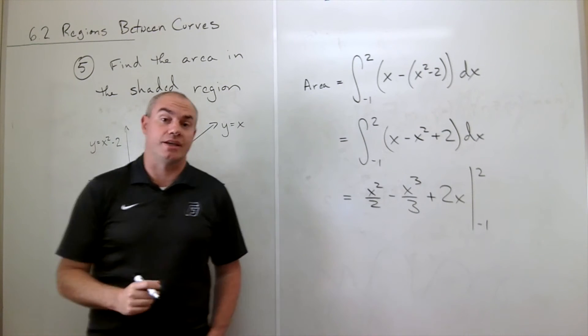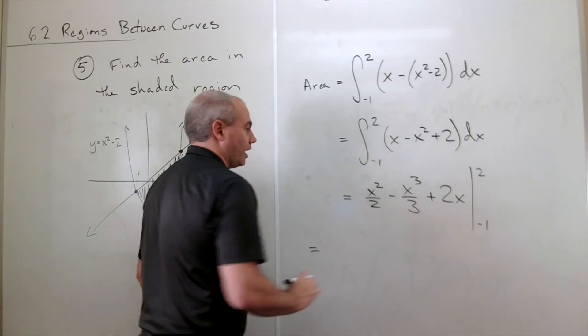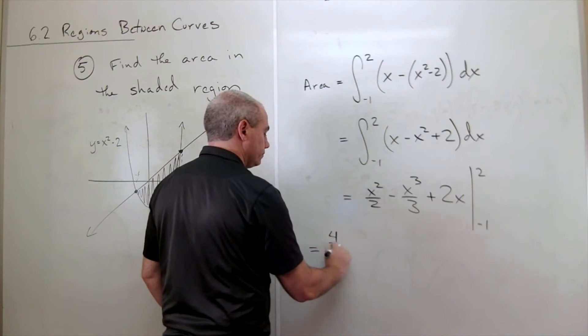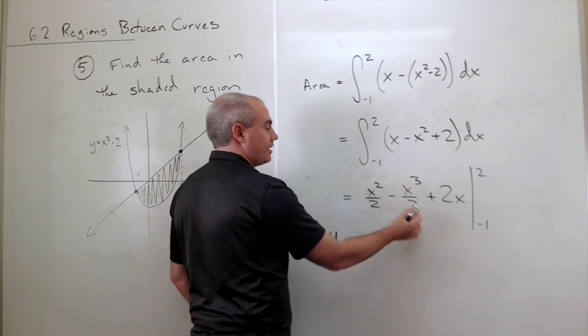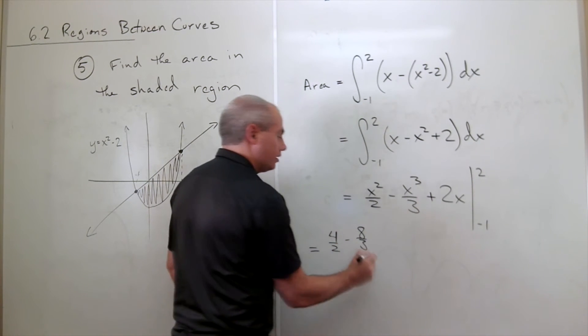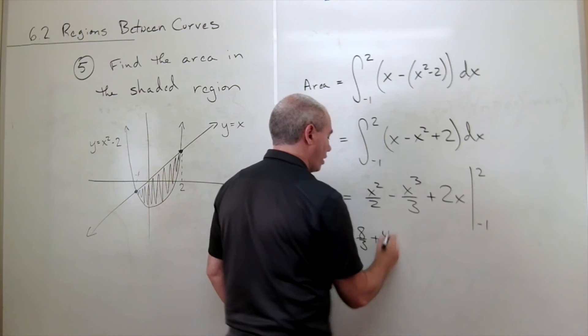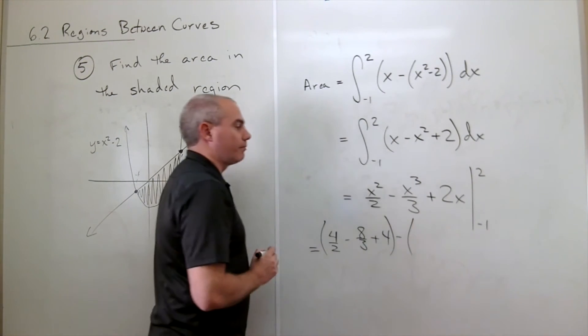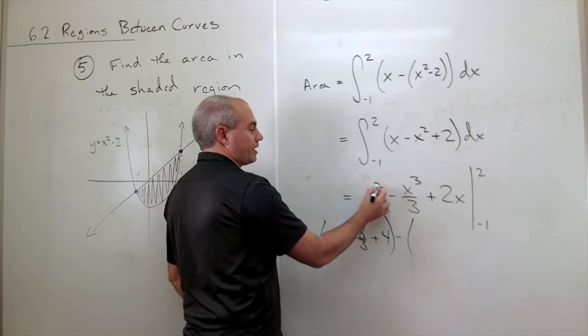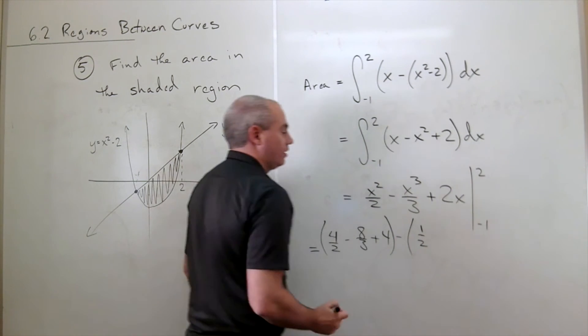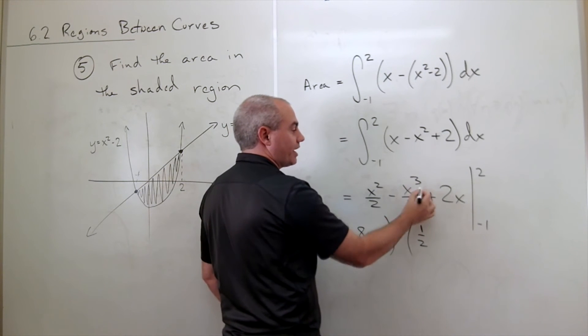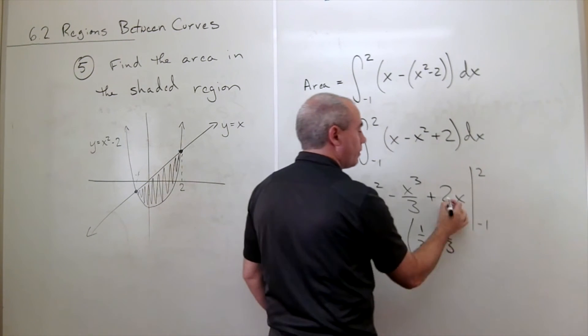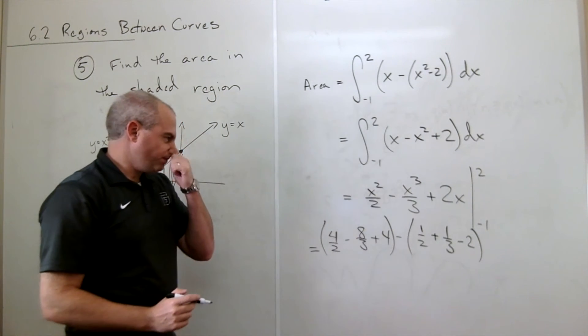So let's go ahead and plug in the two and plug in the minus one. If I plug in two right here, I get two squared, which is four over two. Then I plug in two and I get eight over three with a negative, so negative eight over three. Two times two is four. So that's plugging in the two. Then I subtract, plugging in the minus one. If I plug in the minus one, I get minus one squared, which is one over two, so a half. If I plug in minus one, I cube minus one, get negative one, times negative is positive one-third. And then finally, I plug in minus one and I get minus two.